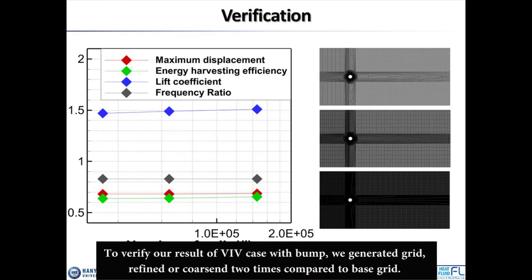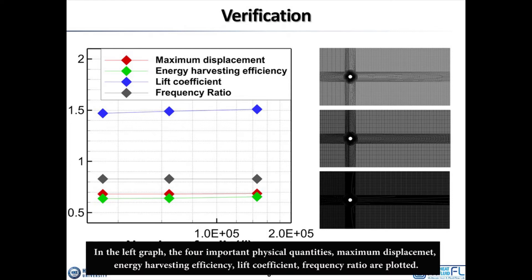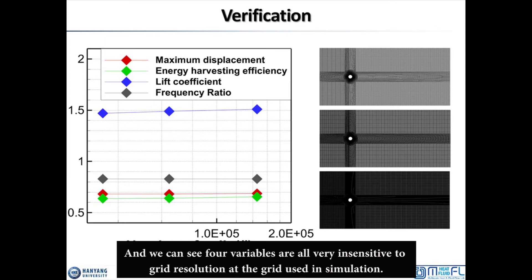To verify our VIV results with a bump, we generated grids refined or coarsened by a factor of two compared to the base grid. In the graph, four important physical quantities are plotted: maximum displacement, energy harvesting efficiency, lift coefficient, and frequency ratio. All four variables are very insensitive to grid resolution at the grid level used in the simulation, and by this insensitivity we conclude that verification is complete.